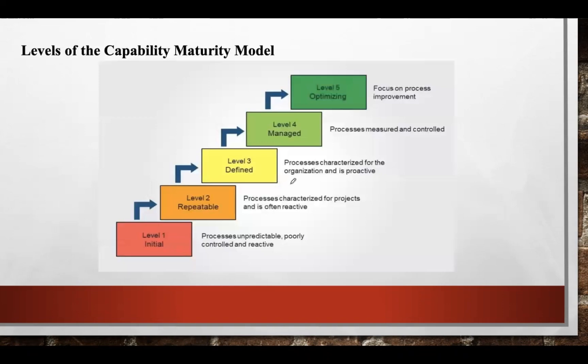Coming to the levels of the Capability Maturity Model, we have a total of 5 levels: Initial, Repeatable, Defined, Managed, and Optimizing.